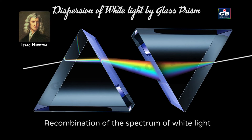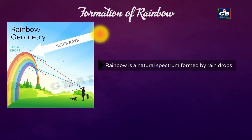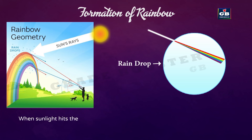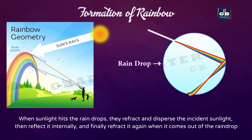Rainbow is a natural spectrum formed by raindrops. It always forms opposite to the sunlight, and the water droplets act as small prisms. When sunlight hits the raindrops, they refract and disperse the incident sunlight, then reflect it internally, and finally refract it again when it comes out of the raindrop.